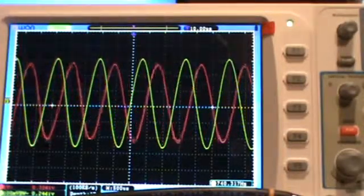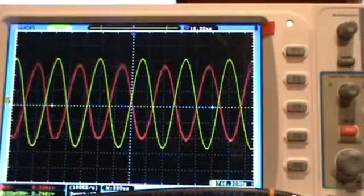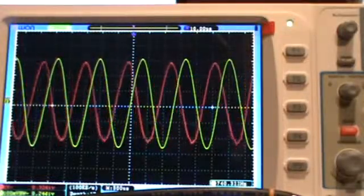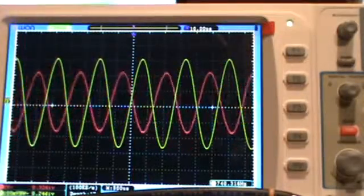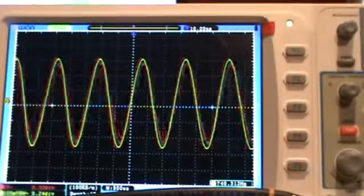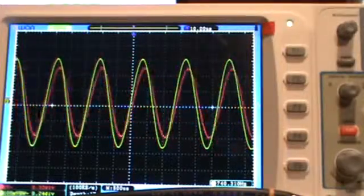The yellow trace is channel 2 of the oscilloscope and it is a reference frequency coming from an audio generator. It's a Heathkit audio generator. It is not disciplined in any way, it's free running.